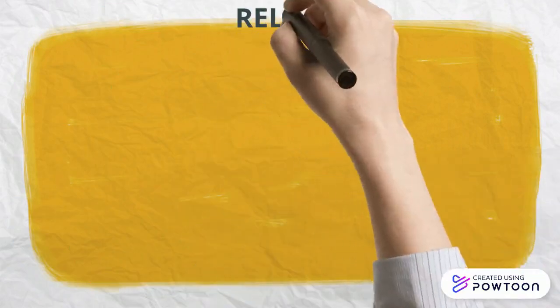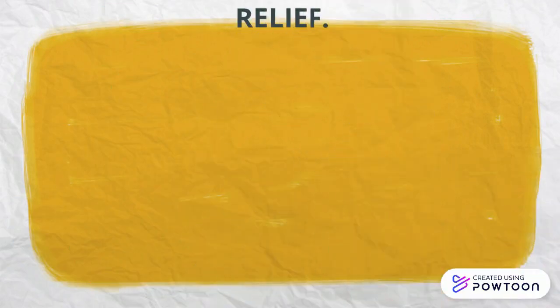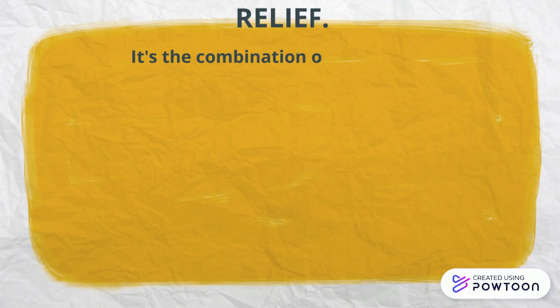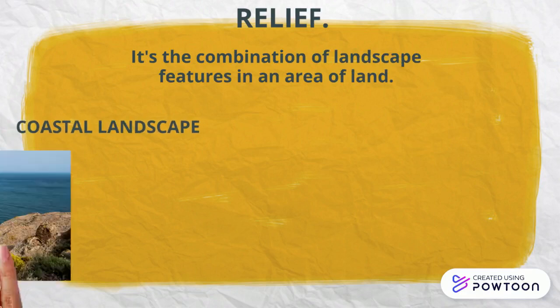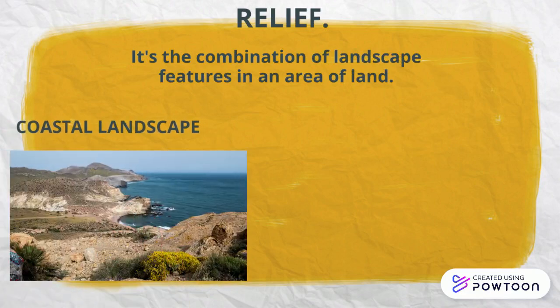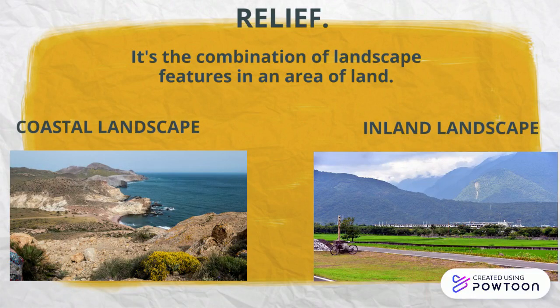The first thing we have to study is the relief, and this is the definition: it's the combination of landscape features in an area of land. There are two types — the coastal landscape, which is near the sea, and the inland landscape, which is far away from the ocean or the sea.